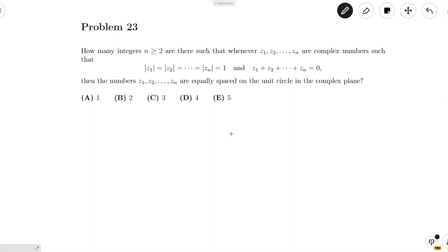Today we're going to be doing problem number 23 of the 2020 AMC 12b. The problem asks us to find the number of integers n greater than or equal to 2, such that whenever there are n complex numbers with magnitude 1 and sum equal to 0, then those numbers are equally spaced out on the unit circle in the complex plane.